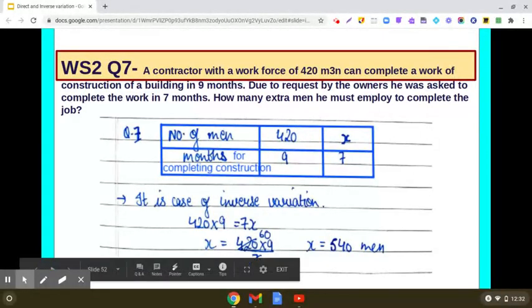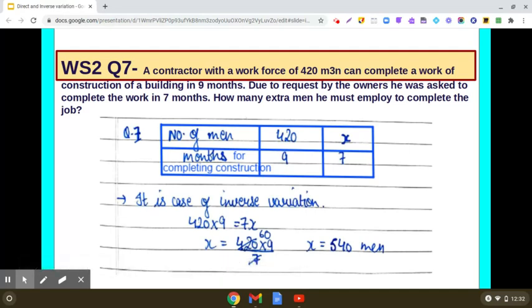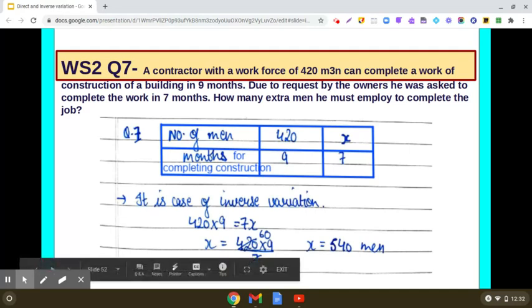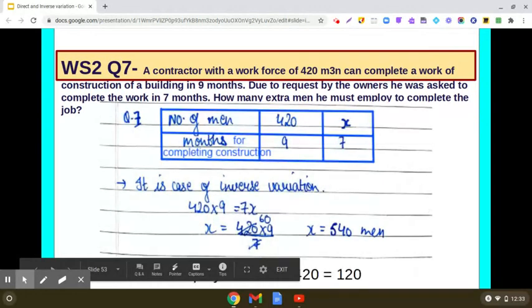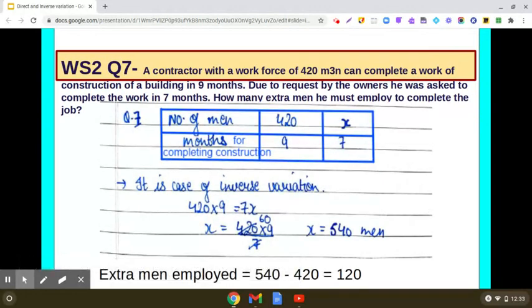540 men are required, so how many extra are employed? So we will be calculating that. So the answer will be 540 minus 420, that is 120. So extra men employed should be equal to 120.